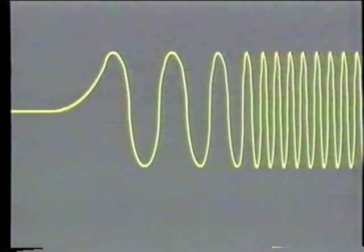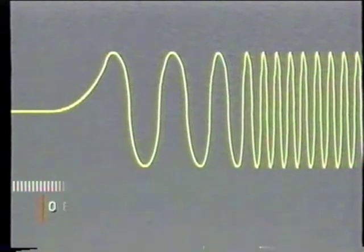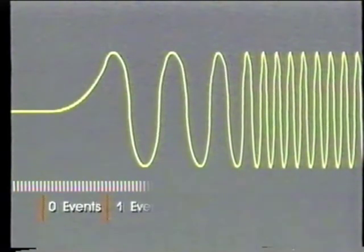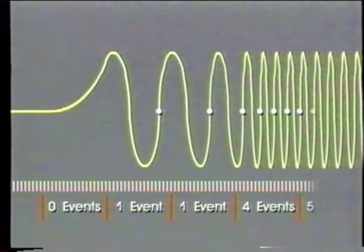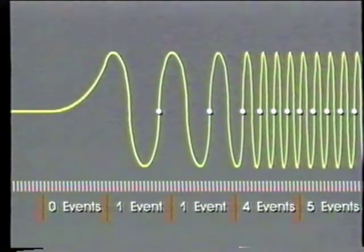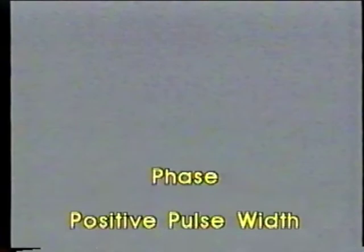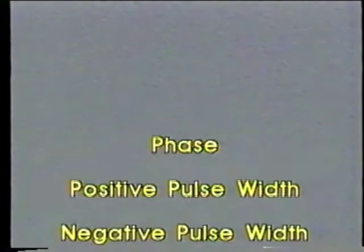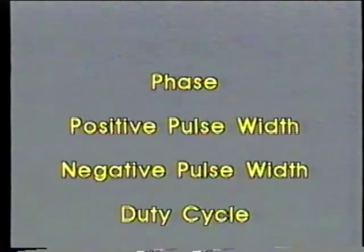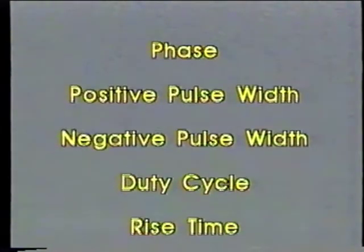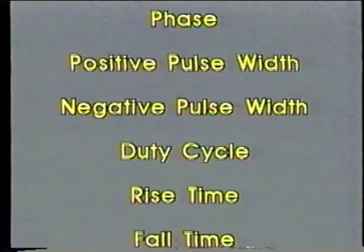A continuous totalized measurement allows you to begin and end measurements independent of the input signal's trigger events. For example, to measure the startup time of an oscillator, the 5371 will count events at time intervals you select, even when the event count is zero. The 5371A can also make other kinds of measurements; the operating manual explains each one in more detail.